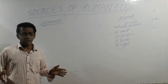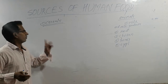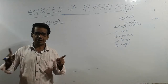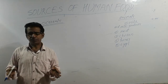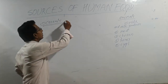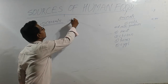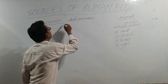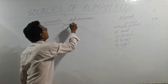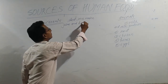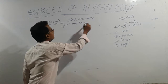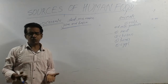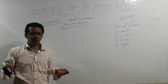Let us study in detail the food that we get from plants. The first one is cereals. What are cereals? These are food grains that form our main diet and are whole grains, mainly containing carbohydrates. Wheat, rice, maize, jowar, and bajra are examples of cereals. These food grains contain mainly carbohydrates.